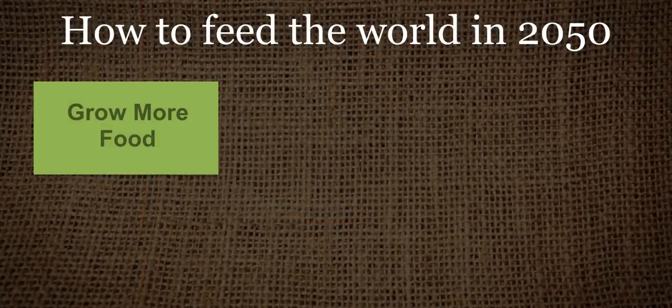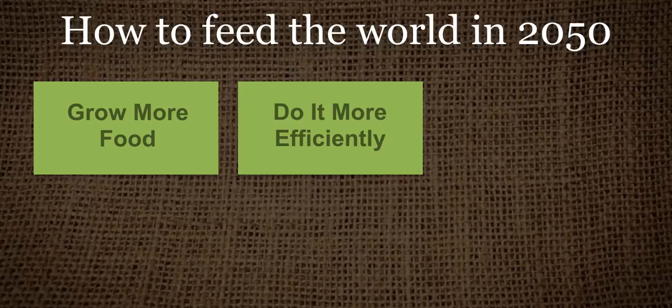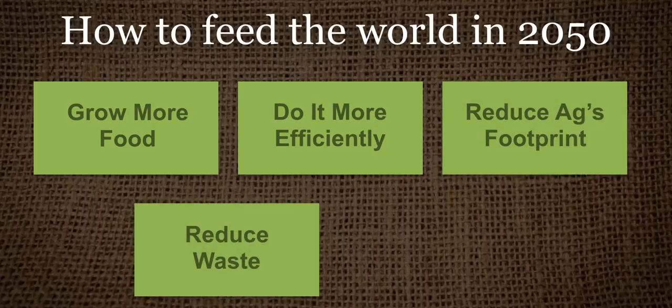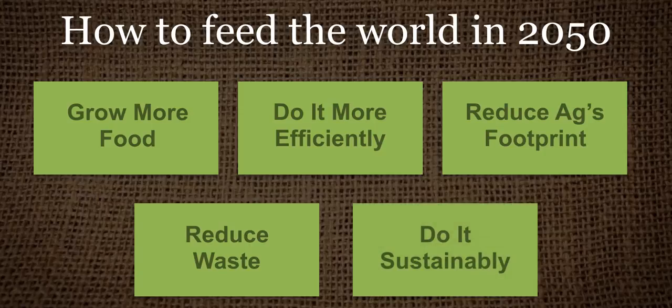First, we need to grow more food. Secondly, we certainly have to do it more efficiently. And third, we have to do it in ways that reduce ag's footprint on our environment.